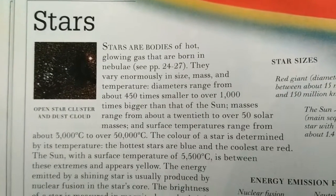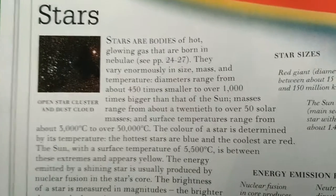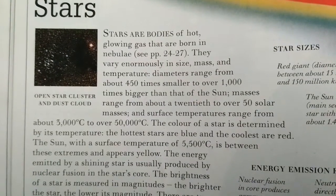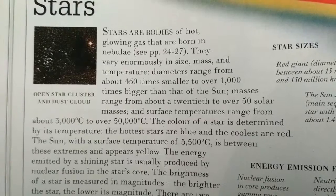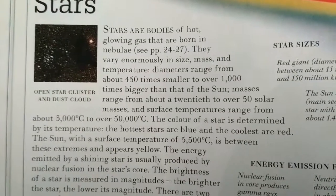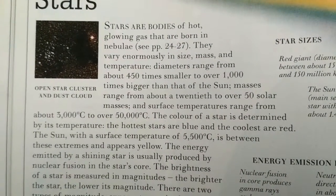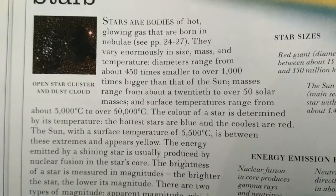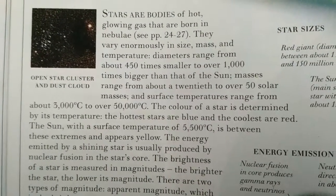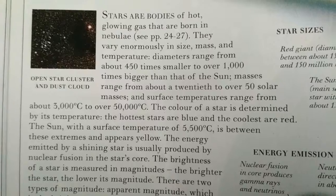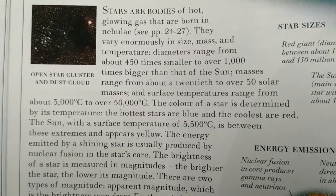They vary enormously in size, mass, and temperature. Diameter ranges from about 450 times smaller to over 1,000 times bigger than that of the Sun. Mass ranges from about 20 to over 50 solar masses. Surface temperature ranges from about 3,000 degrees Celsius to over 50,000 degrees Celsius.